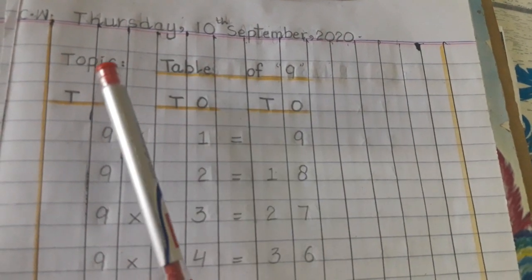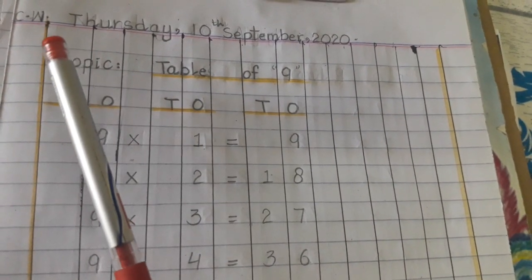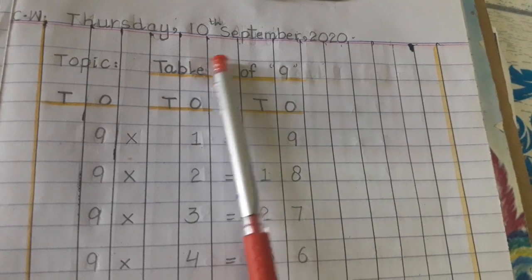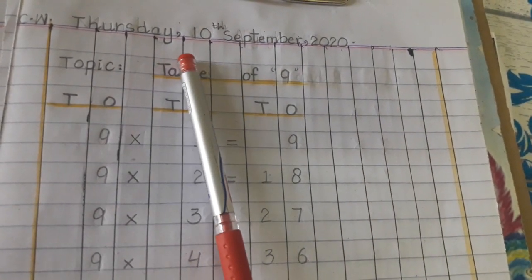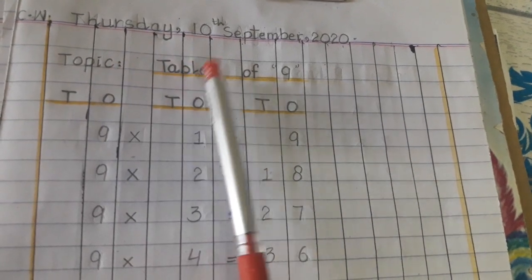If you have missing work, okay. Today first of all you will write CW Thursday, 10 September, 2020. Then skip one line and write the topic: Table of 9.